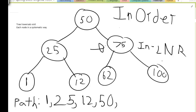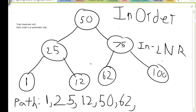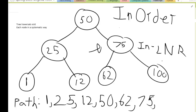At 75: can I go left? Yes. Now I'm at 62. Can I go left? No. Can I get the node? Yes — 62 is the next node I visit. Then at 62: can't go left, already done the node, can't go right, so I pop back up to 75. I already visited the left subtree of 62 and haven't done the node yet, so I get 75 as my node. Can I go right? Yes — 100. And 100 is the last node I visit. I visited the most left branch first, which is the lowest number, and the most right branch last, which is the biggest number.